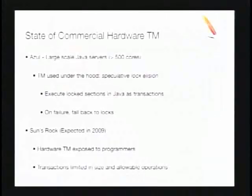There's been a lot of interesting work in hardware transactional memory, but the state of commercial hardware TM is still modest. The two best known examples are Azul, which produces large-scale Java-based servers with over 500 cores and uses TM under the hood to more efficiently execute locks without exposing it to the programmer. Another is Sun's Rock processor, expected next year, which will expose hardware TM to the programmer. However, transactions are still limited in size and allowable operations, bounded by hardware resources like cache size.